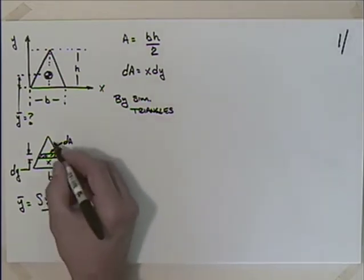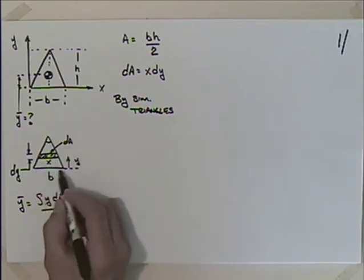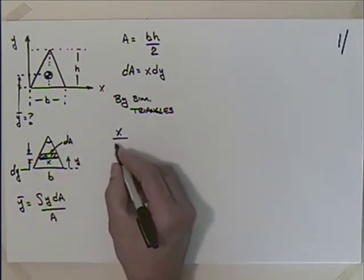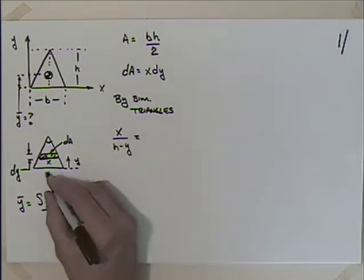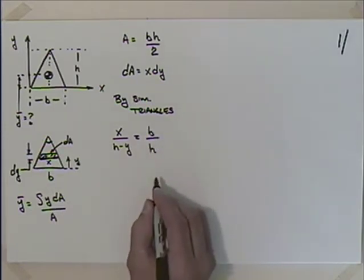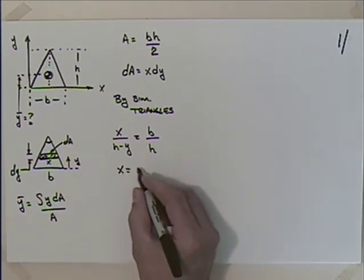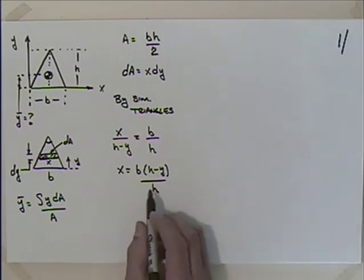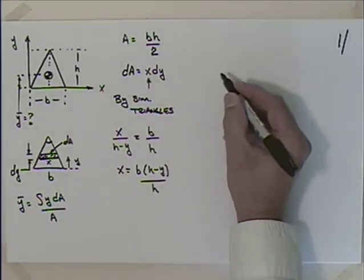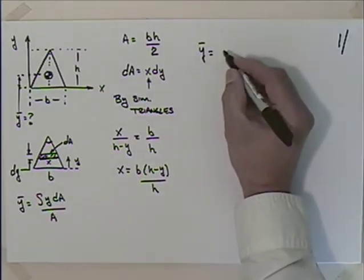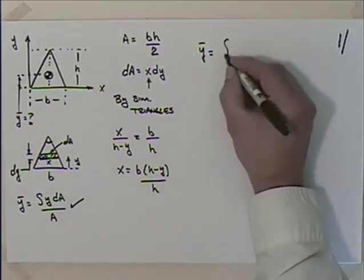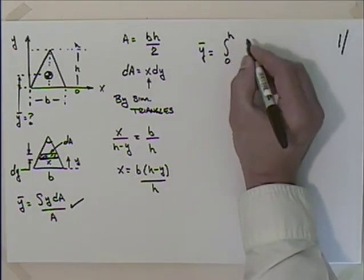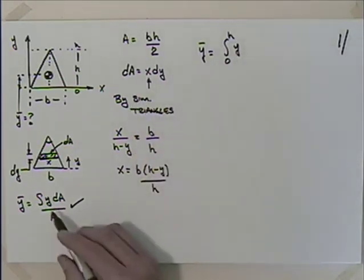Looking at similar triangles: the smaller triangle and the larger triangle share this angle, so they are mathematically similar. I can say that x is to its height (h minus y) as the base b is to the total height h. Solving for x: x equals b times (h minus y) divided by h. When I substitute that in, I can say Y-bar equals the integral from 0 to h of y dA over A.